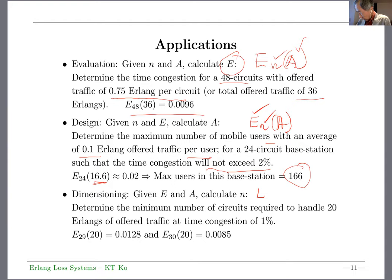The final one is given E and A, you want to calculate N. That's called dimensioning. Engineers want to know how many circuits they need to accommodate certain traffic intensity for a particular performance criteria. In this case, 1%, 0.01. The number of circuits needed to give maximum 1% blocking for 20 Erlang traffic turns out to be 30 circuits.